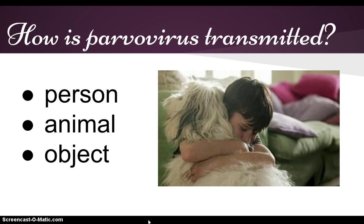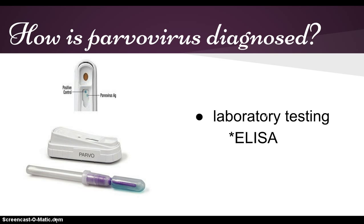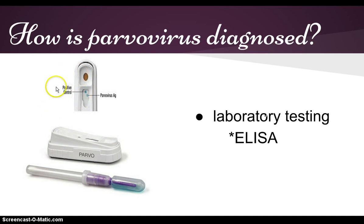Unvaccinated dogs can contract parvovirus in the streets, especially in areas where there are many dogs. How is parvovirus diagnosed? The veterinarian diagnoses parvovirus on the basis of clinical signs and laboratory testing. The ELISA test — the enzyme-linked immunosorbent assay — has become a common test for parvovirus. It detects parvovirus in dogs' stools and is performed in about 15 minutes. Because this test is not 100% specific, your veterinarian may recommend additional tests and blood work.